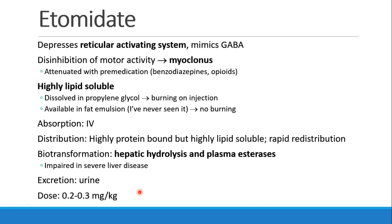Etomidate is given IV and is highly lipid-soluble, so it rapidly redistributes to other tissues. It is also highly protein-bound. Etomidate undergoes biotransformation in the liver by hydrolysis, but also by plasma esterases in the bloodstream. If patients have severe liver disease, you may see prolonged action of etomidate, because both hepatic activity and hepatic generation of esterases can be limited. It is then excreted in the urine. A normal induction dose is 0.2 to 0.3 mg per kg — in a 20 mg vial, that should be enough for just about any adult.